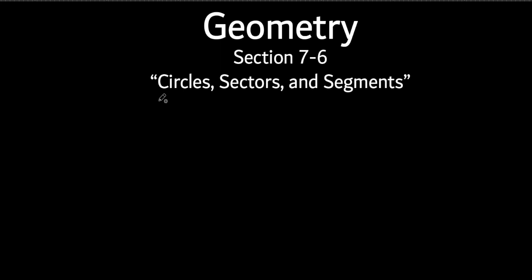First thing we're going to talk about is the area of a circle. We've talked about area this chapter. So the area of a circle — I'll just put a little C for circle. You probably already have this formula memorized. Area is always going to have a squared unit. The formula is pi times the radius squared, because area always has to be squared. Pi doesn't have any units at all — it's just a number.